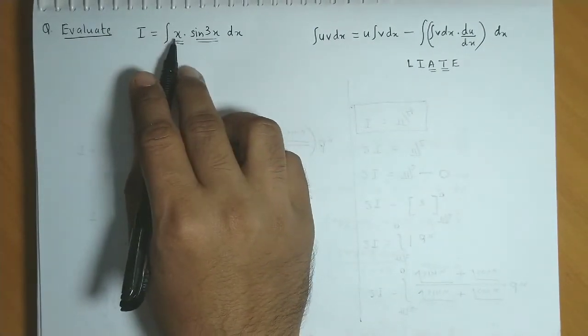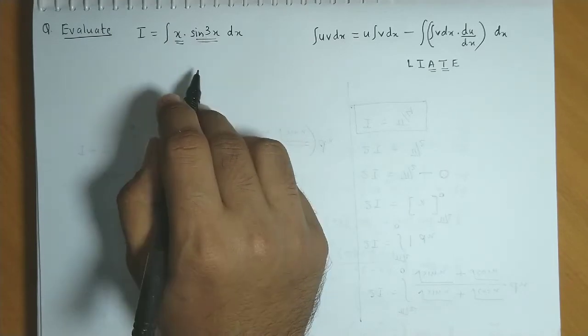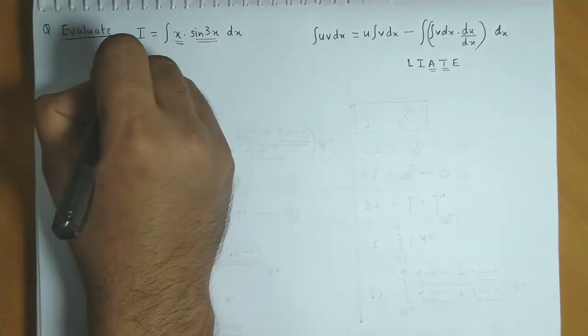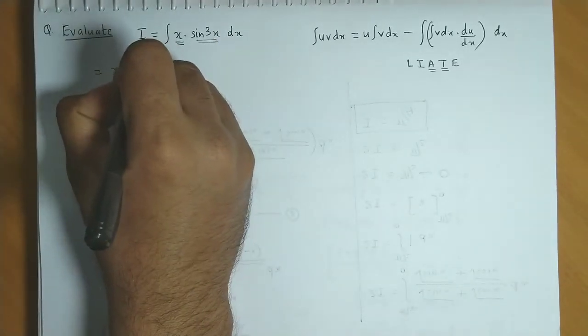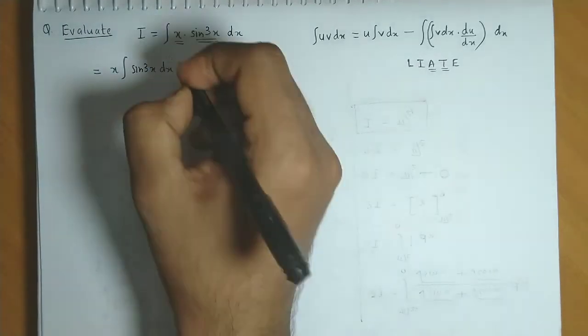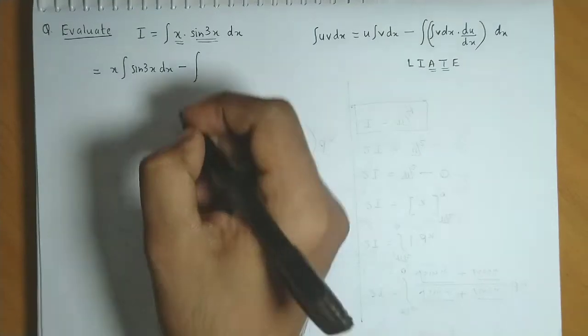So let us apply the u into v rule or integration by parts. We have u, that is x, into integration of sine 3x dx minus integration of,